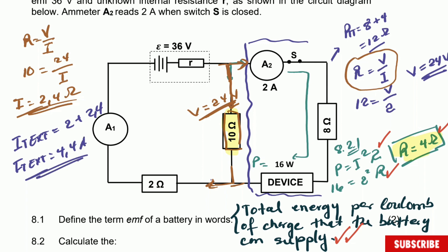For question 8.2.2, marking breakdown: one mark for the Ohm's law formula, one for the first substitution, one for the substitution when calculating the current through the 10 ohm resistor, one for the addition of currents, and one for the final answer — five marks total.